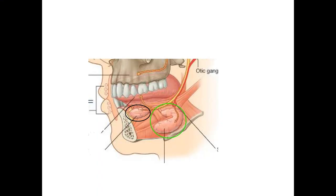Hello everyone, welcome to Logic Medical. Today's interesting topic is the submandibular salivary gland. As the name suggests, it is located in the submandibular region, also called the digastric triangle, because it is bounded by the anterior and posterior bellies of the digastric muscle. Here, one half of the mandible is cut so the gland is visible.